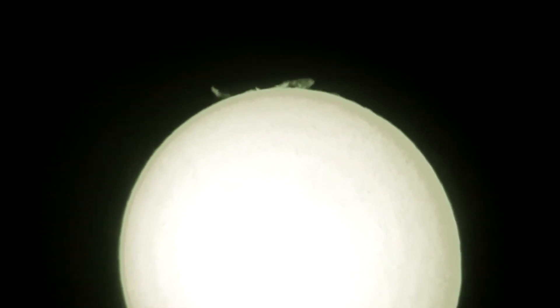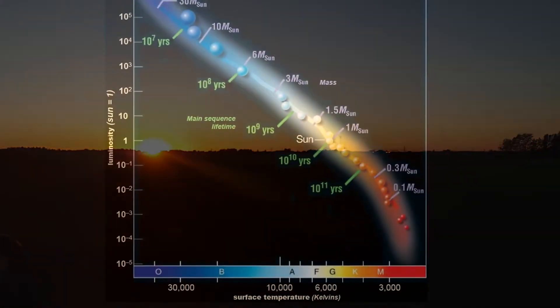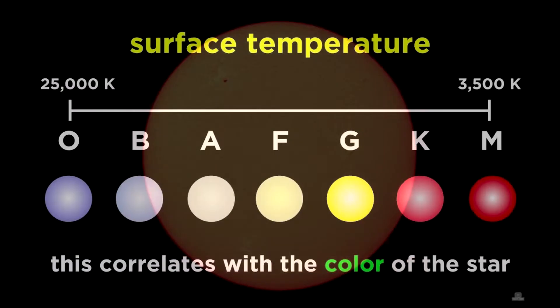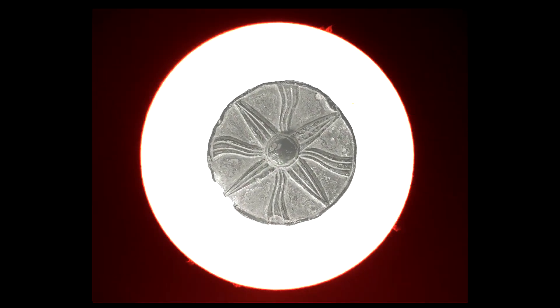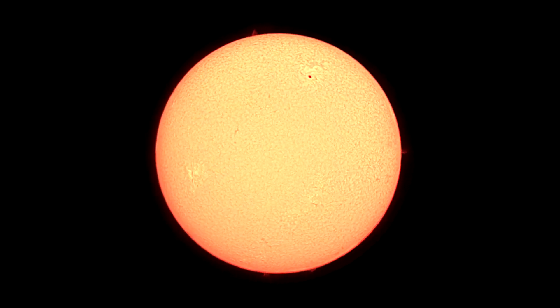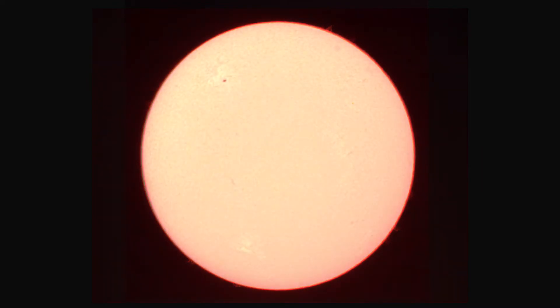Now let's begin with a brief description of our Sun. The Sun is an average yellow dwarf star, a G2V type in its spectral class, and a very massive, hot and ancient star. It's made up of mostly hydrogen gas. The size of the Sun is more than 100 times the Earth's diameter.